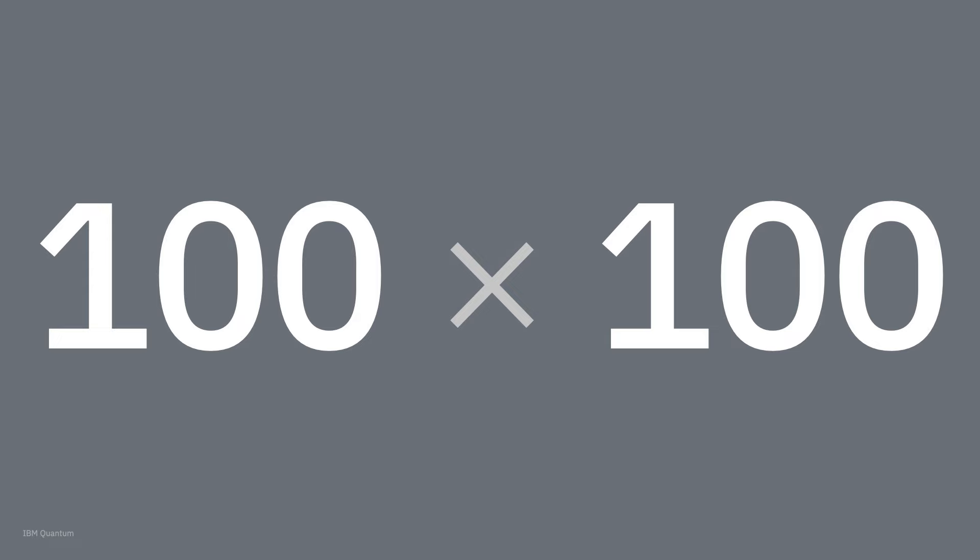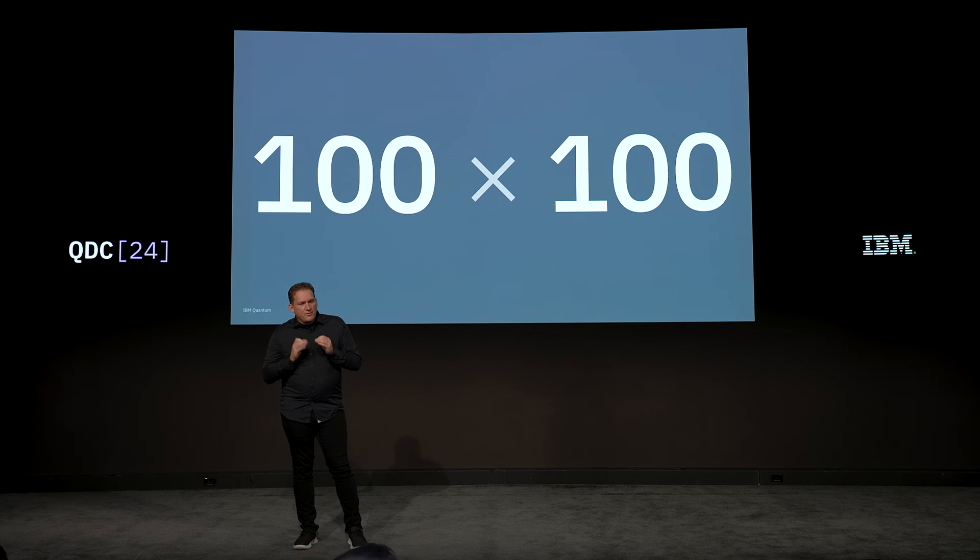Two years ago, we set a challenge we called the 100 by 100 challenge. We promised we would be able to extract accurate results from a quantum computer running circuits with 100 qubits and depths of 100, and we said we'd do it in a day of runtime. This is what we mean by 5,000 gates. I'm happy to say we've reached the point where we can run 5,000 gates.